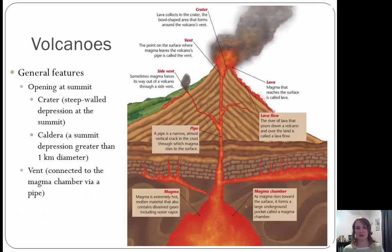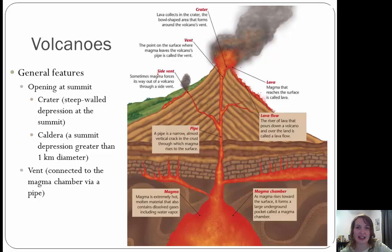Some general features of a volcano: we have an opening at the summit called a crater, or a caldera — a steep depression at the summit greater than 1 kilometer in diameter. We also have a vent connected to the magma chamber via pipe, and a side vent or parasitic cone. We have the lava on the outside, a lava flow, the magma chamber inside the earth, and a pipe feeding all of it.